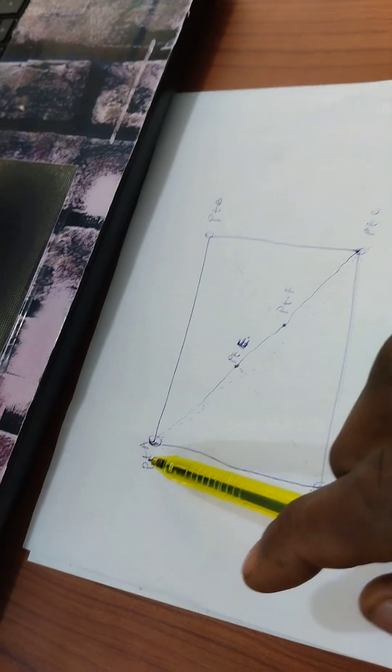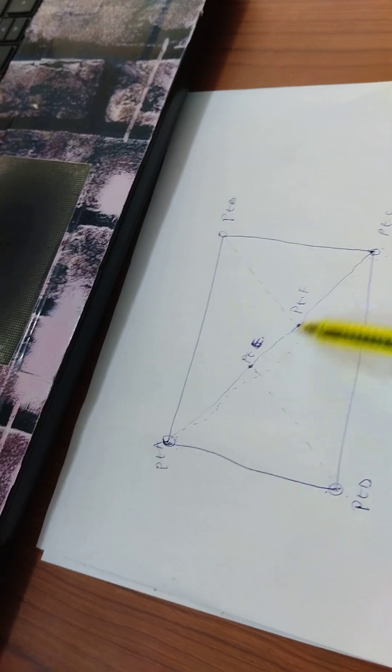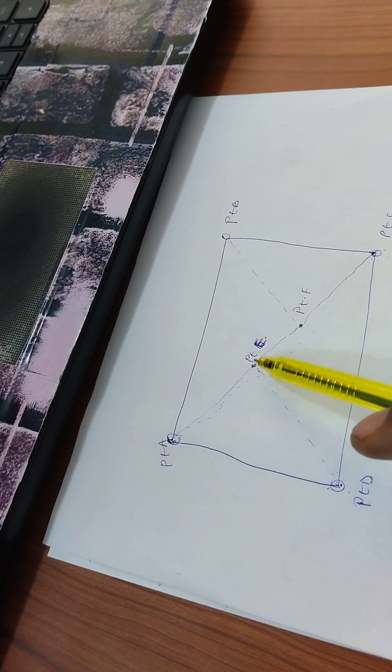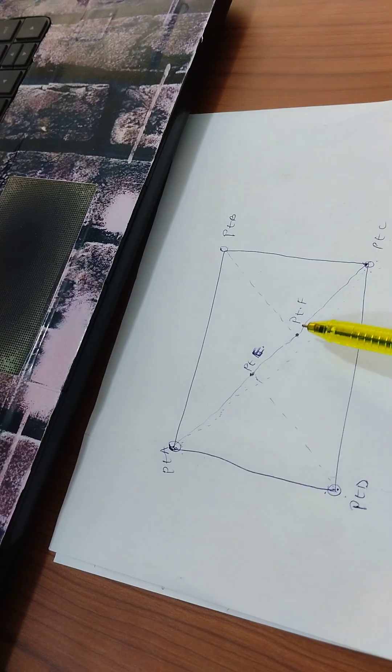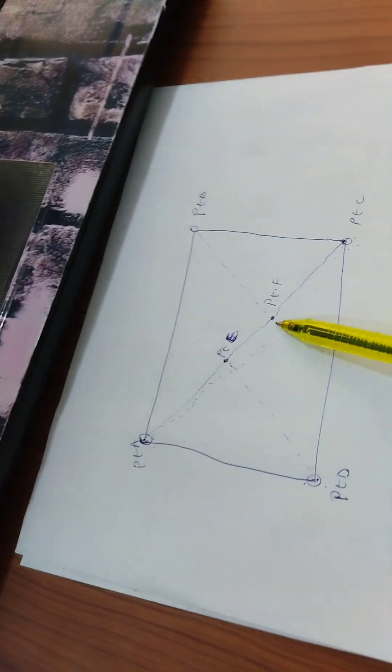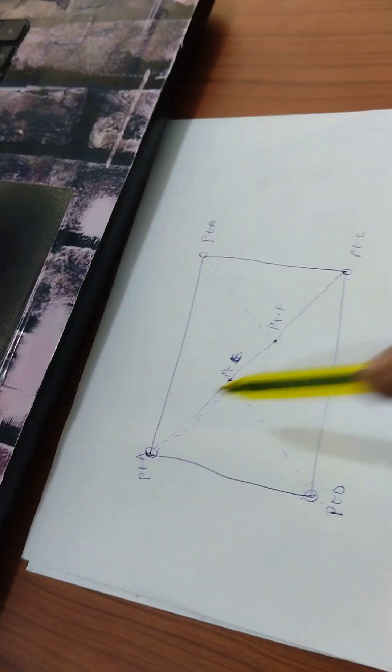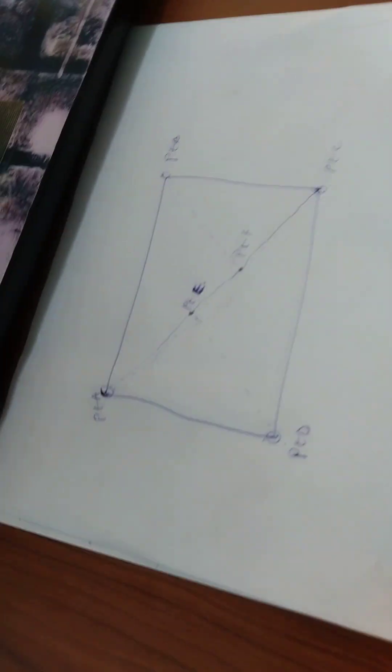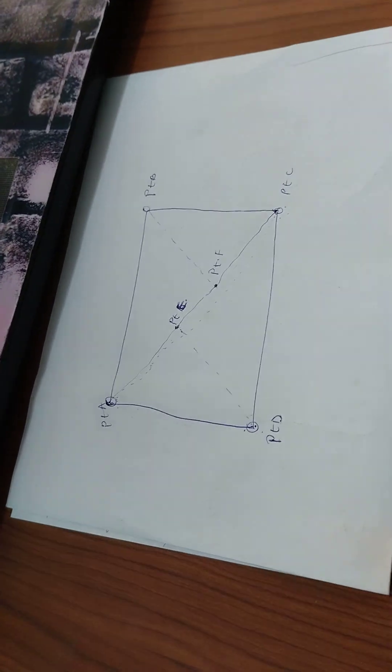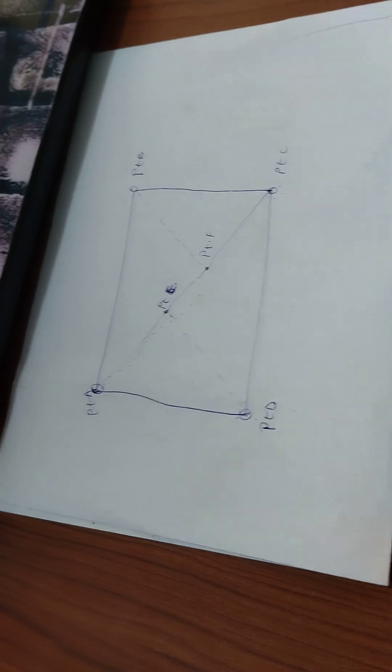And note, when you have the point E and F, you note the distance from A to E. You write it down. The distance from A to F, you also write it down. And don't forget, each chain line will be represented on different pages. That is, a chain line per one page of the fieldbook.